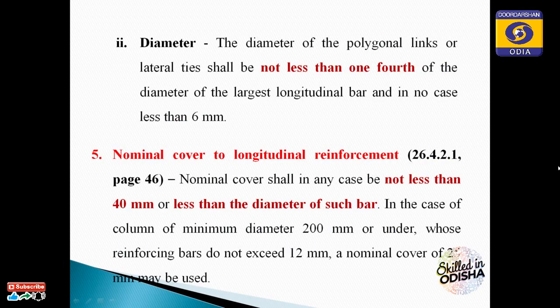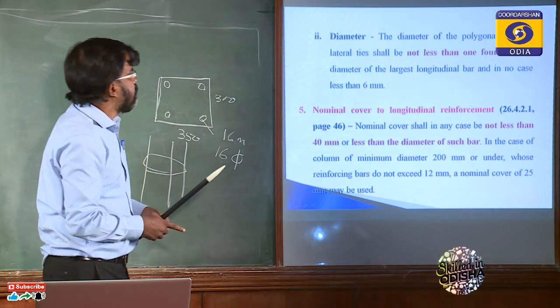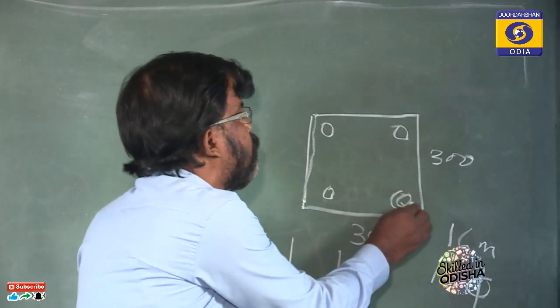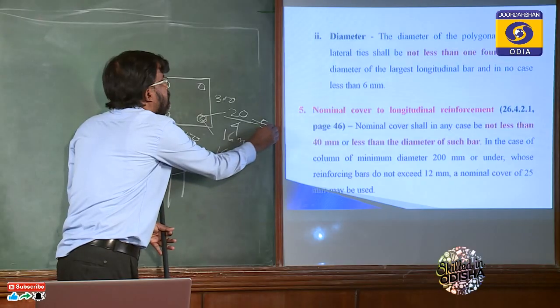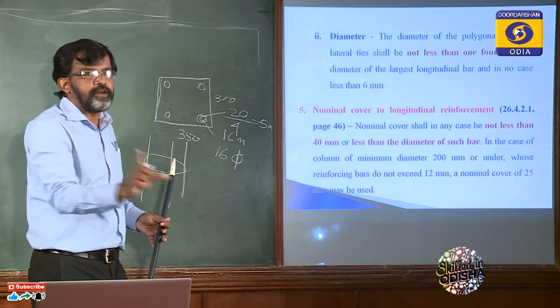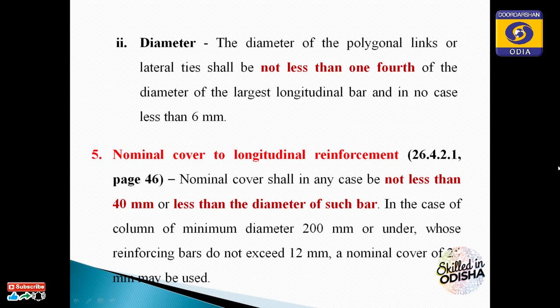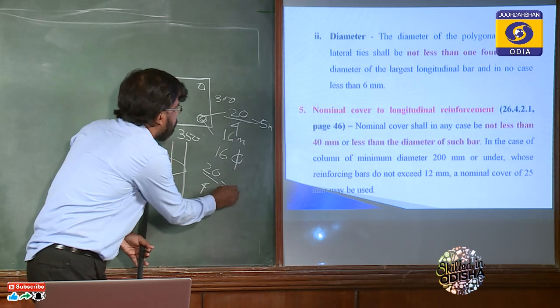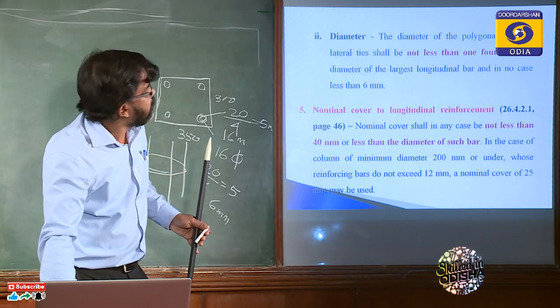Regarding the diameter of transverse reinforcement: the diameter of lateral ties or transverse reinforcement shall not be less than one-fourth of the diameter of the largest longitudinal bar. For example, if the largest longitudinal bar is 20mm, then 20/4 = 5mm. However, the second condition states it cannot be less than 6mm in any case. So even though the calculation gives 5mm, you must provide at least 6mm.